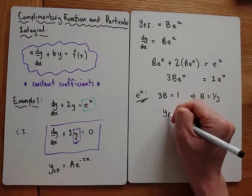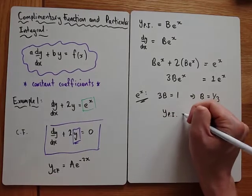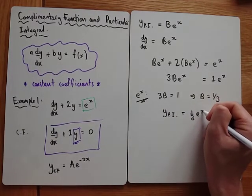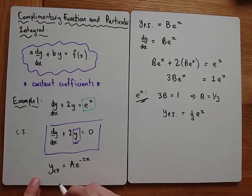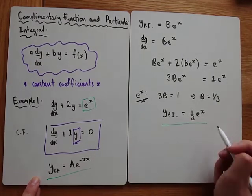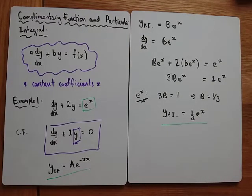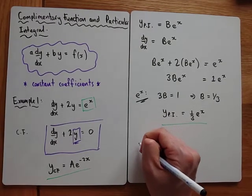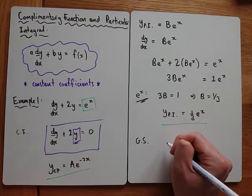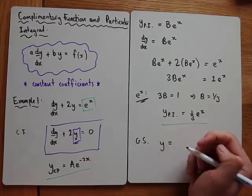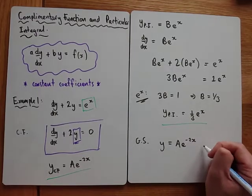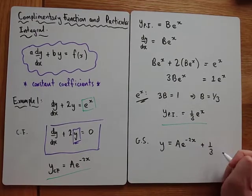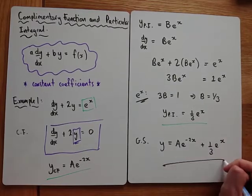So the particular integral is one third e to the x. Once we've got our complementary function and our particular integral, our general solution is y equals ae to the minus 2x plus one third e to the x. You just add them both together to get your full solution.